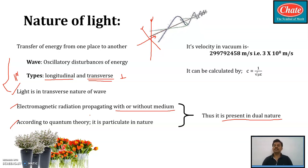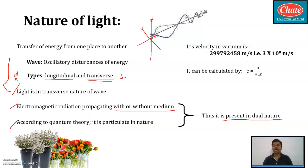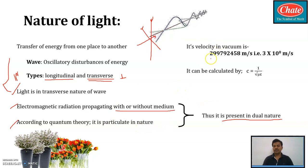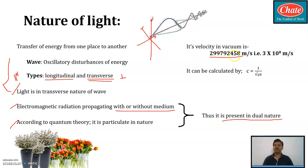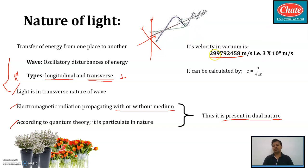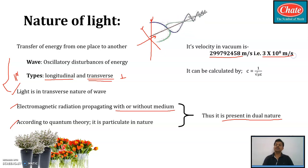The velocity of light in vacuum is 2,99,792,458 meters per second. Practically, since 2.99 something is approximately 3, we say the velocity of light in vacuum is approximately 3 × 10⁸ meters per second.